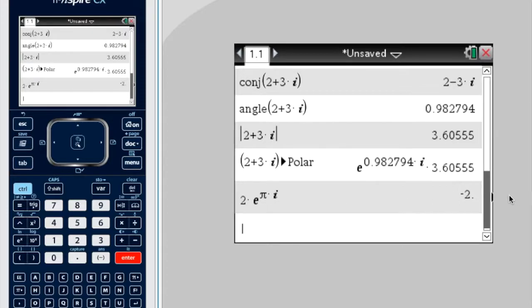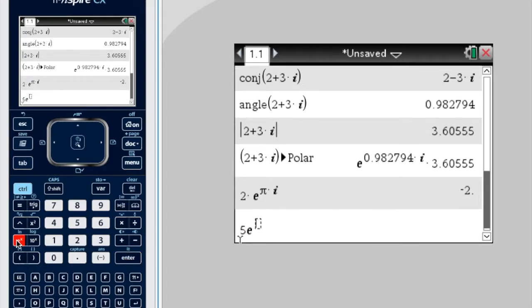Now, and sorry, it actually already gave me the rectangular form. So let's think of something else. Let's try 5e to the pi on 4.